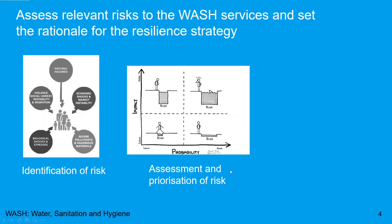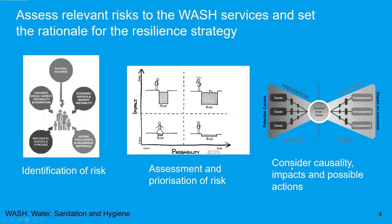Once we have prioritized, we select risk events to look at them in more detail. We look at how a risk event fits within causal chains — for example, what causes the risk event, its causality, and what are the impacts of the risk event: what will happen as a consequence. Understanding causes and effects helps us identify possible actions to mitigate or manage the risk.